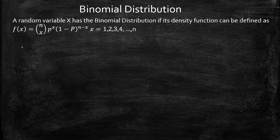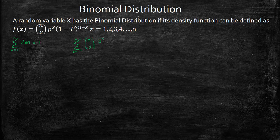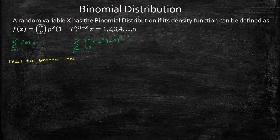For the binomial distribution, the summation from x equals 0 to n of f(x) should equal 1. Our f(x) is n choose x times p raised to x times (1 minus p) raised to (n minus x). We recall the binomial theorem, which states that (a plus b) raised to the power n equals the summation from k equals 0 to n of n choose k times a raised to k times b raised to (n minus k).